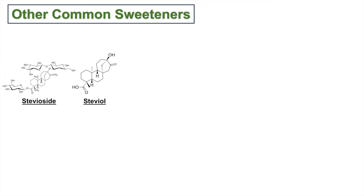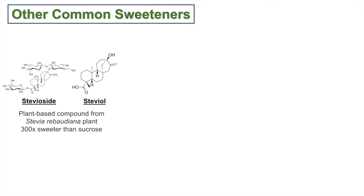Some other common sweeteners include stevioside, or stevia — these are just other names for the same compound. Stevia is an artificial sweetener commonly seen in many dietary foods. It is a plant-based compound from the Stevia rebaudiana plant, and it is about 300 times sweeter than sucrose. What is special about this compound is that it is not absorbed at all, so we don't get any metabolism or calories from it.